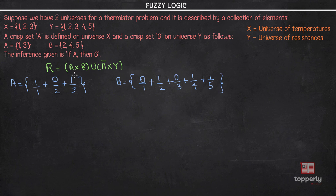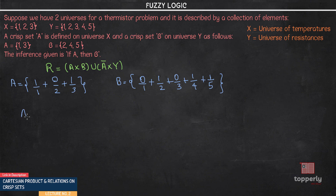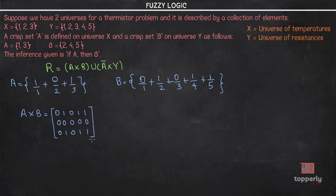As per our relation, we first perform the Cartesian product A cross B. For those who don't remember how to do the crisp Cartesian product, please refer lecture 2 of our fuzzy logic playlist. So we have A cross B. Now let us find the Cartesian product of A-bar and Y. To find A-bar, that is the negation of A, we take the opposite of the membership values: wherever we have 1 it becomes 0 and wherever we have 0 it becomes 1. So A-bar equals 0/1 plus 1/2 plus 0/3.